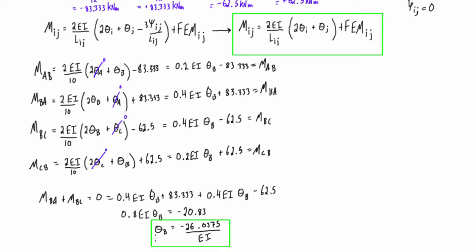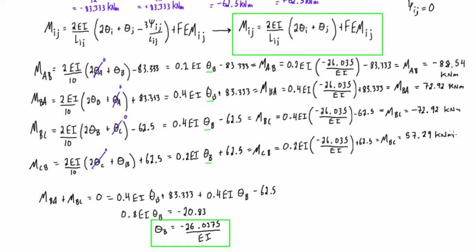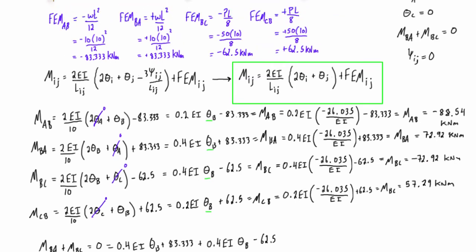Isolating for θB, we get θB equals negative 26.0375 over EI. We box that result because now that we know θB, we substitute it back into all four moment equations — for M-AB, M-BA, M-BC, and M-CB — to find the actual moment values.